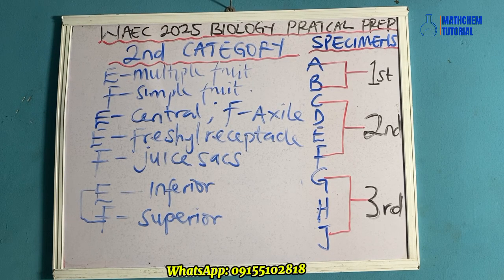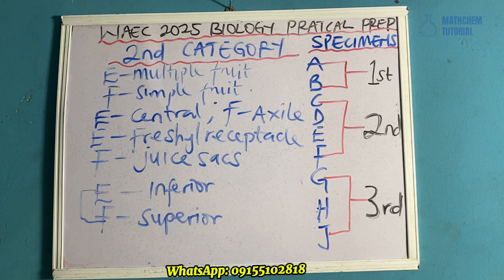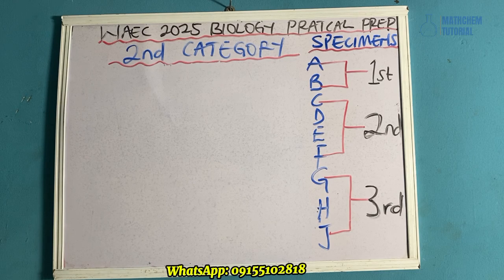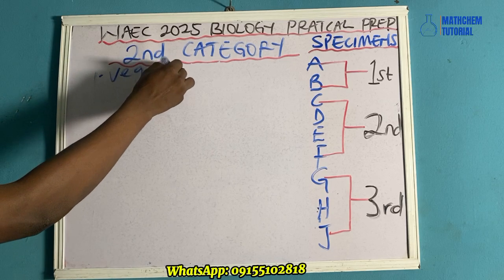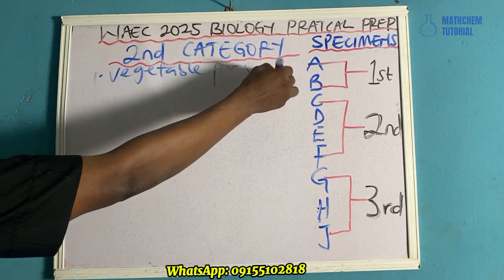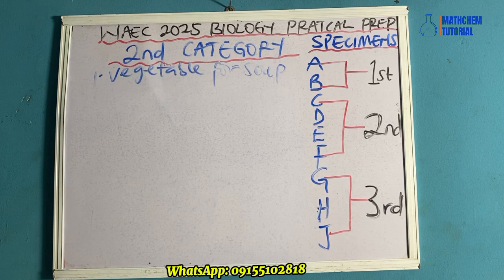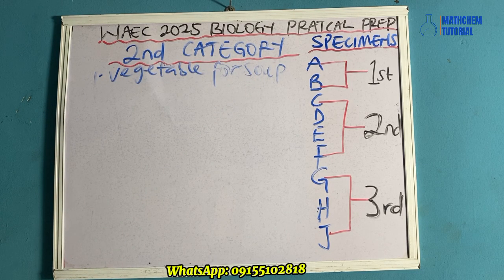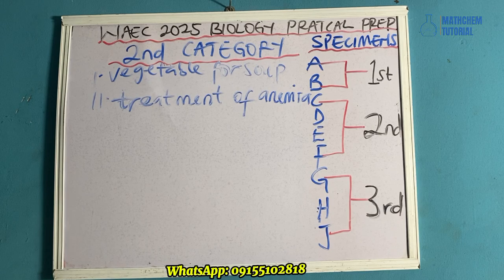Another question they can ask you from this second category is that you should state two uses of specimen C. Remember, specimen C is the water leaf plant. Use number one: it is a vegetable for soup — people use the water leaf plant for cooking. Use number two: it is used for the treatment of anemia.